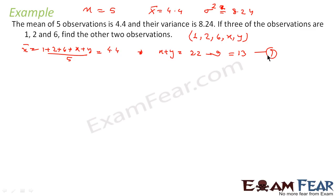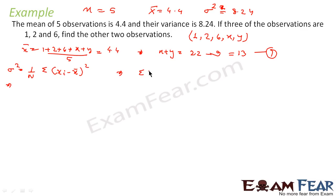The second equation uses variance = 8.24. Variance = (1/n) × Σ(xi − mean)², so Σ(xi − mean)² = n × variance = 5 × 8.24 = 41.2. That is our second equation.